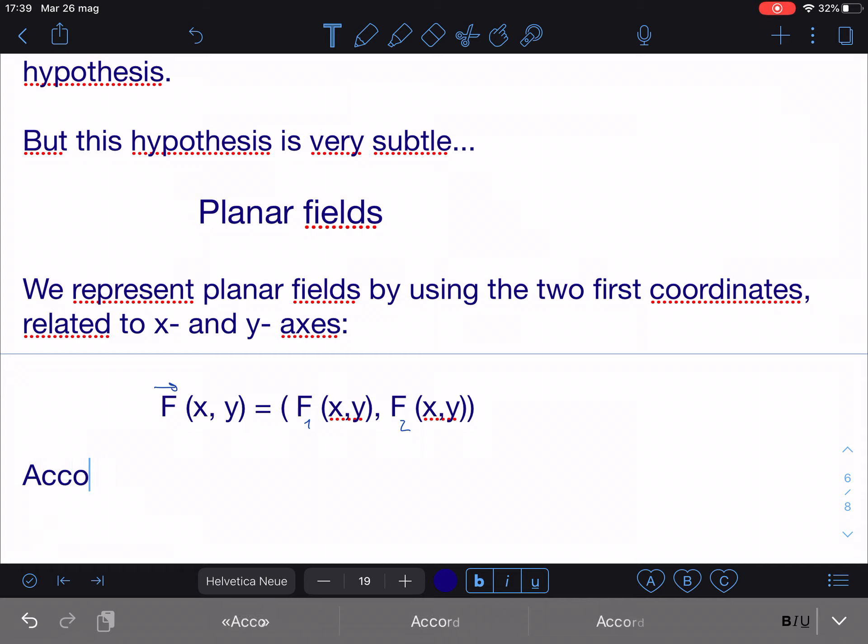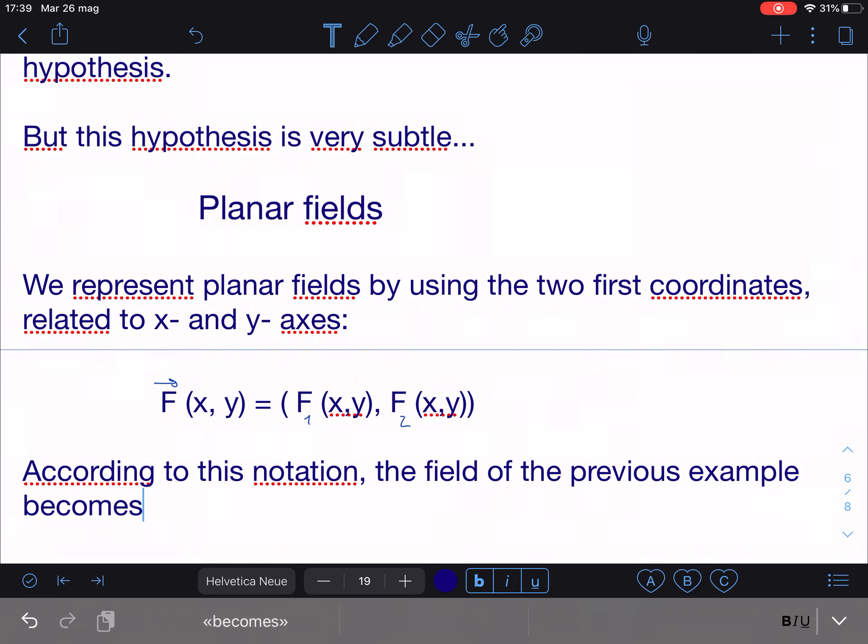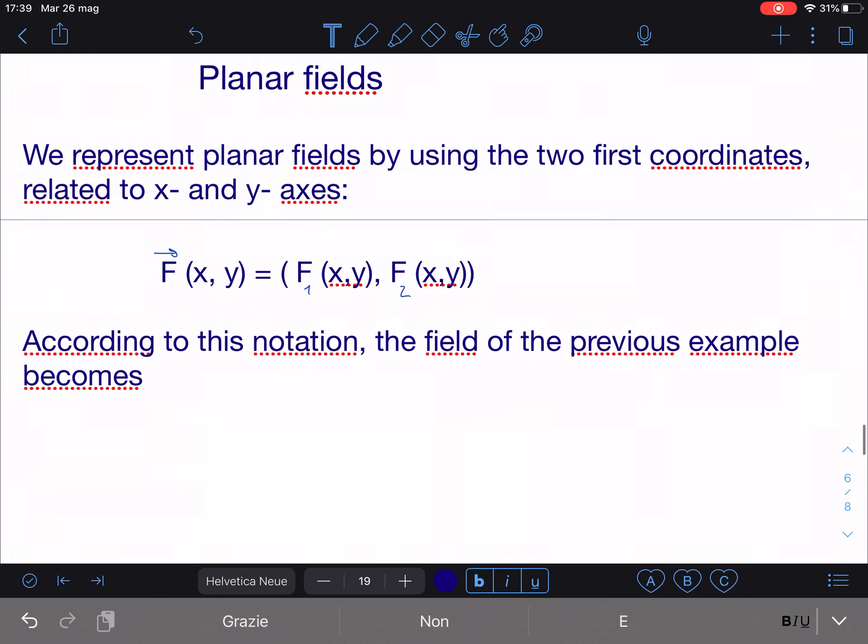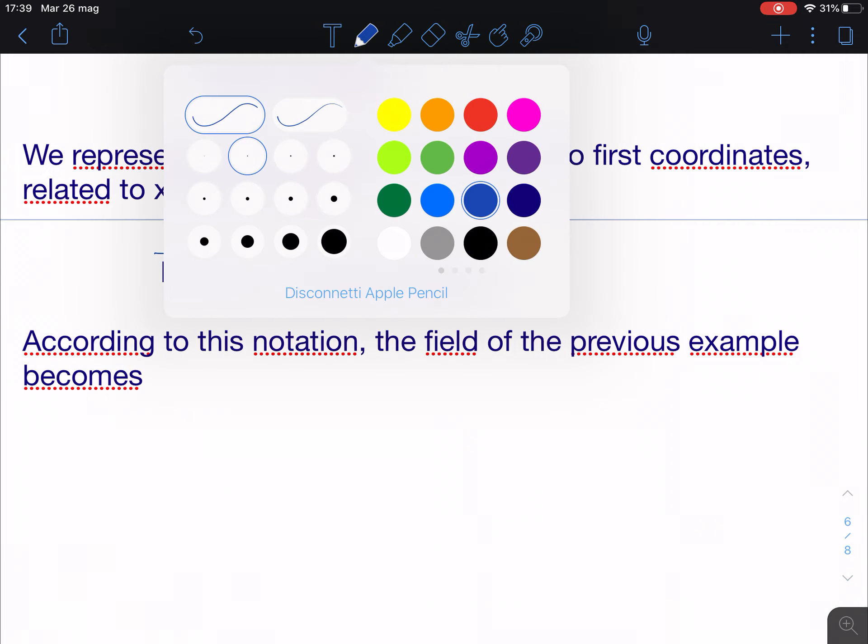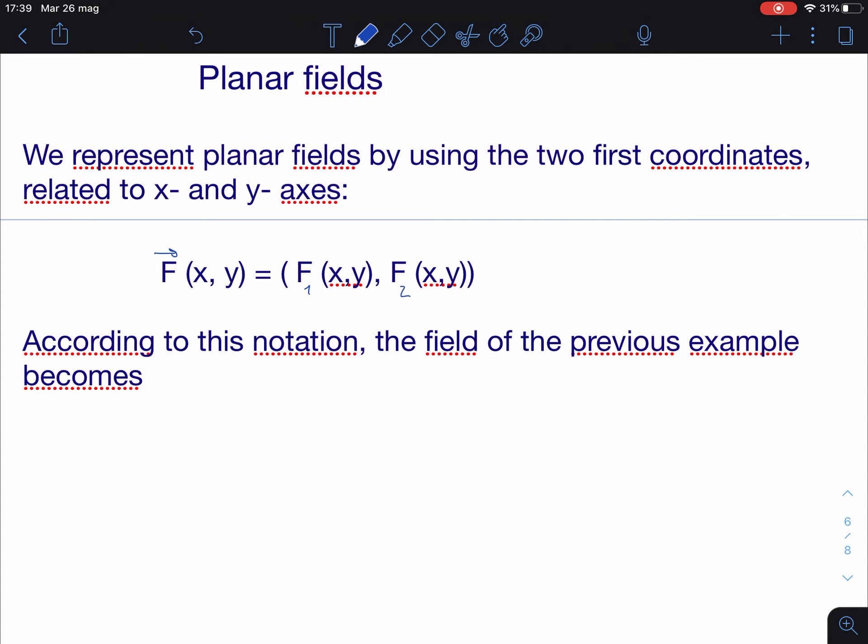So according to this notation, the field of the previous example, which is very important and very deep, becomes the following. So we have, now I write it directly with a pen. So it is capital F of (x,y) is equal to minus y divided by x squared plus y squared, x divided by x squared plus y squared. And remember that this field, as we proved, is irrotational, yet non-conservative.